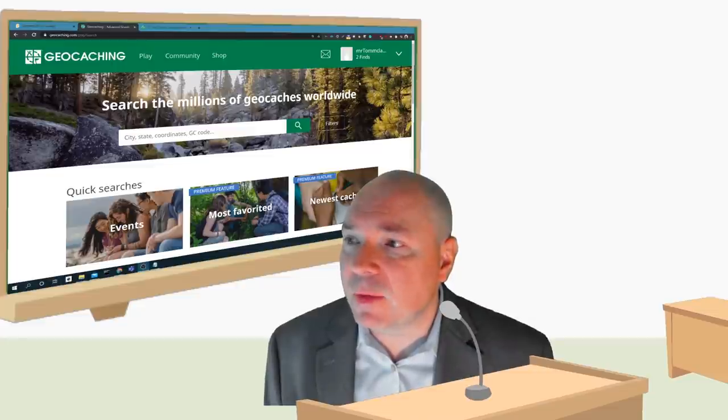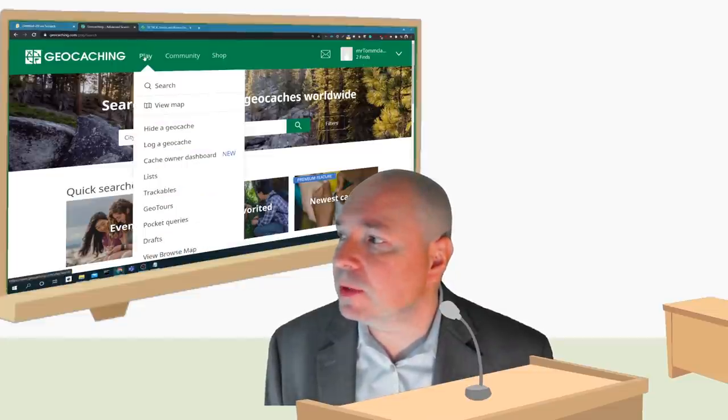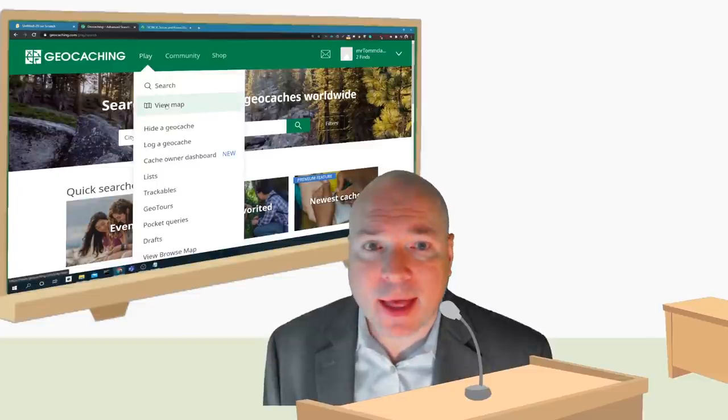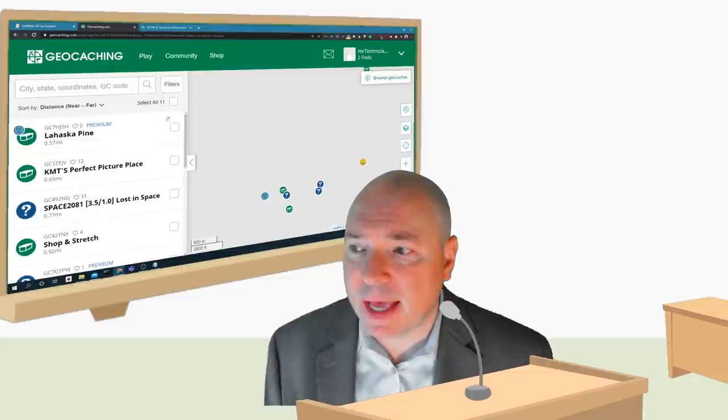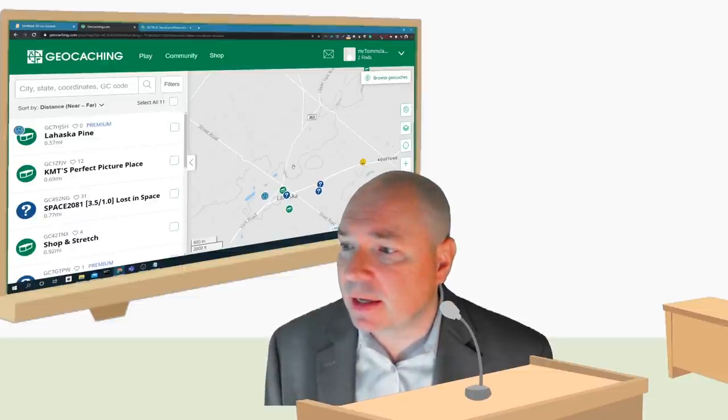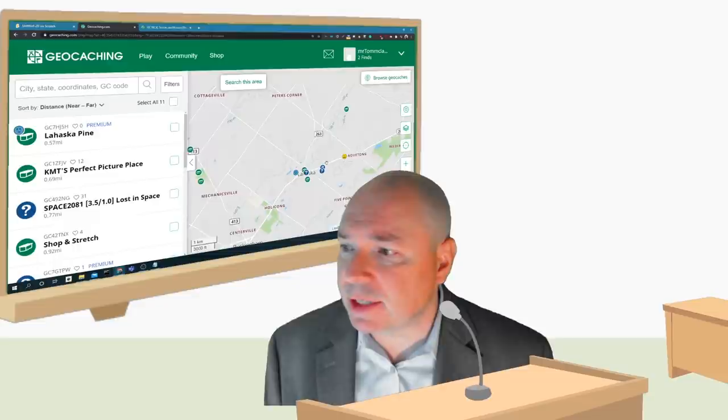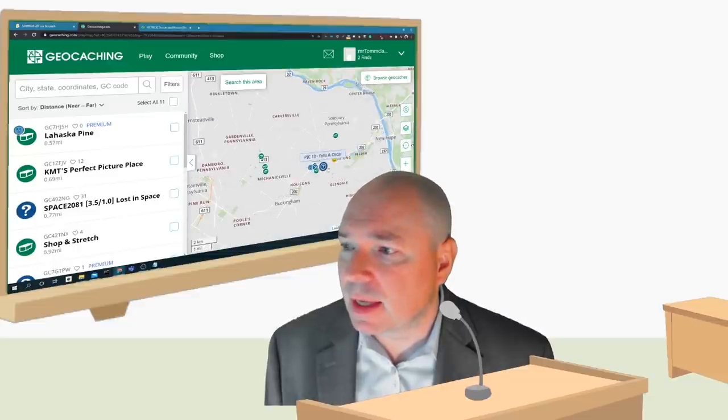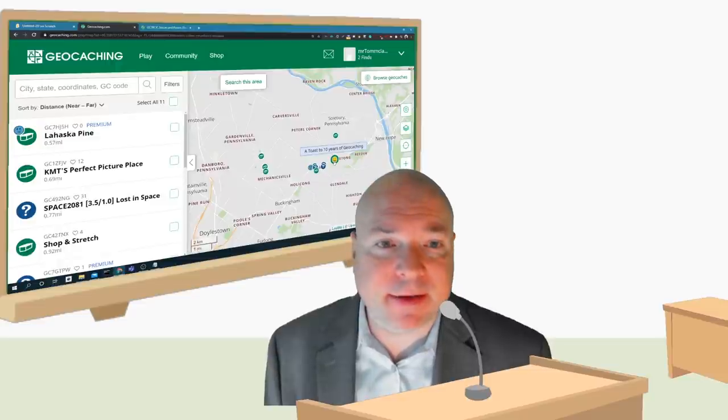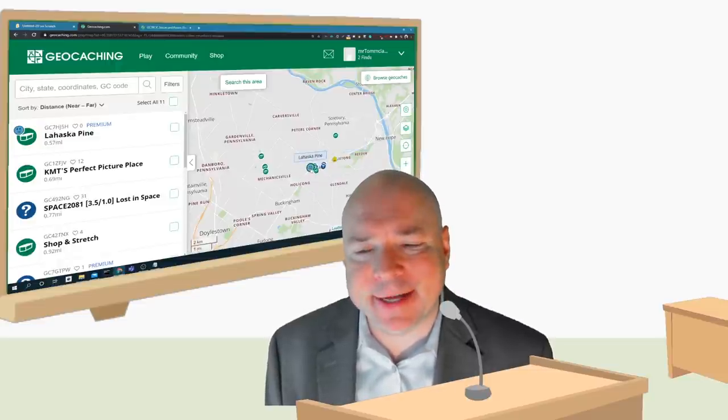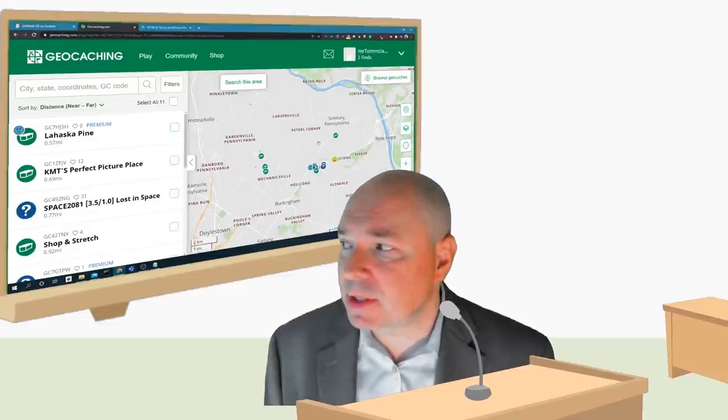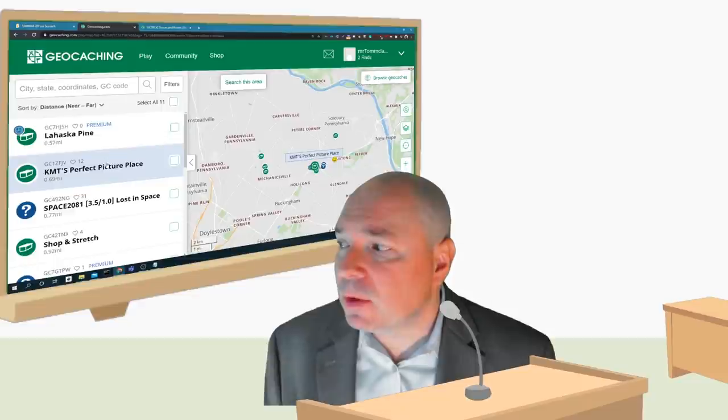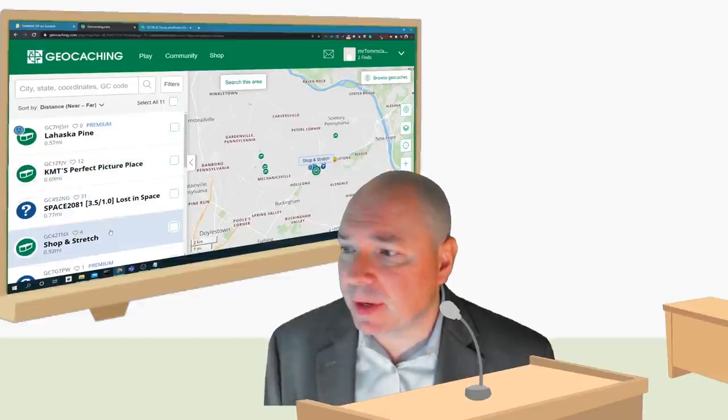And if we want to find a geocache, what we do is we click on Play and we click on View Map. And now you can see I get a map of the area of all the different geocaches. And there's a whole bunch of them. You can see the ones that I looked for. The happy face means I found it. The sad face, I didn't find it. There was nothing there. So sometimes they're there, sometimes they're not. But if you look, you can see there's a listing of them here on the side.